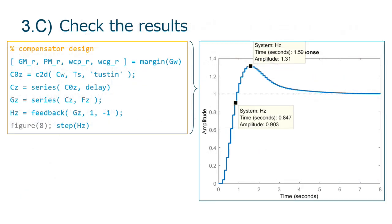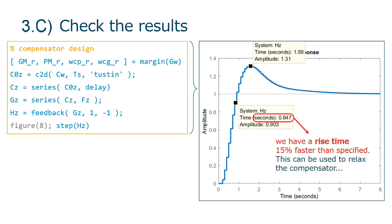Here we can see the expected step response and verify that although we have specified a 1 second rise time, the control system response is 15% faster. We can use this margin for relaxing the requested phase margin on the compensator.